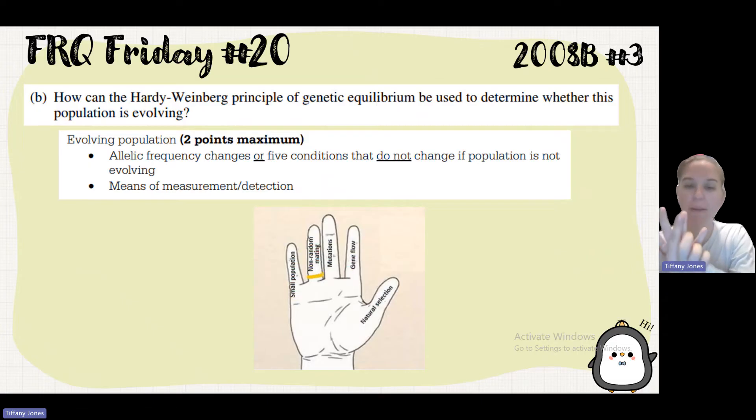You need there to be non-random mating. So the thing is, I need to make sure that they're mating with each other and that it's not based on any type of sexual selection. You want there to be no mutations. You want there to be no gene flow. So you don't want any new alleles coming into your population or leaving your population. And you don't want any traits to be more favorable or less favorable. So that's no natural selection.